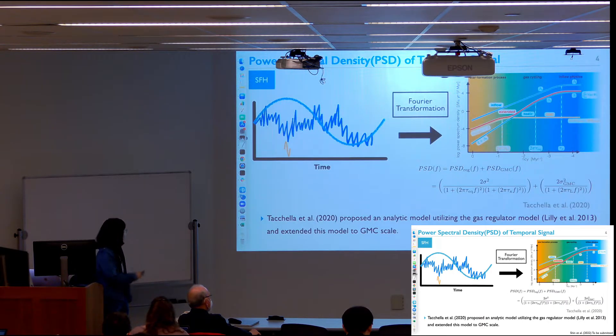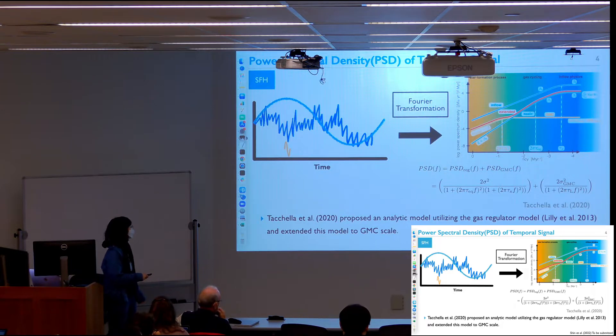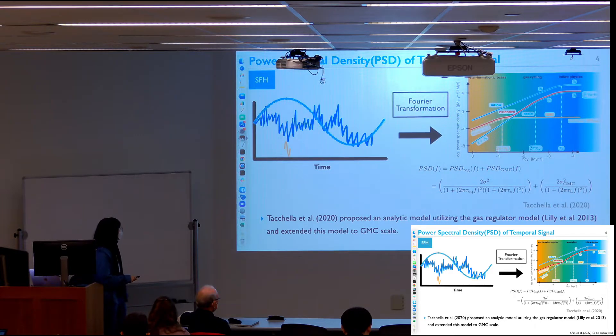Since the Fourier transformation is really effective to show the impact of each scale, it's a very useful tool to estimate the impact of physics on a specific scale. And Tekela 2020, he proposed an analytical model using the gas regulator model and exact solution and random motion analysis to propose a PSD model. This regulator model usually explains the galaxies between the halo and galaxy scale, but this model extends to the GMC scale, regarding the birth and destruction of the GMC. So now we understand the galaxy star formation history from GMC to cosmic range.